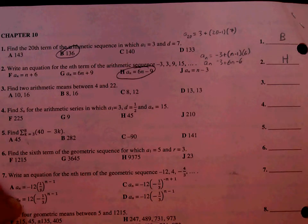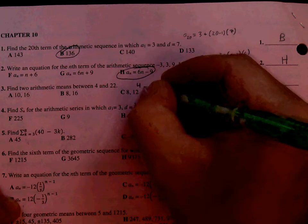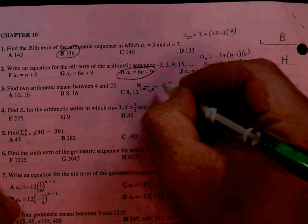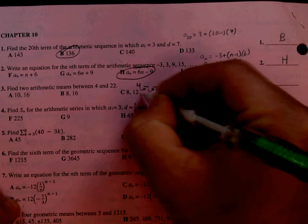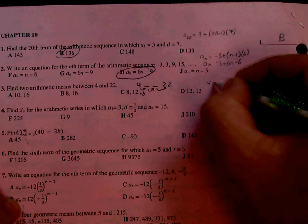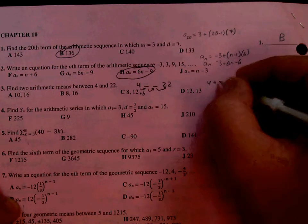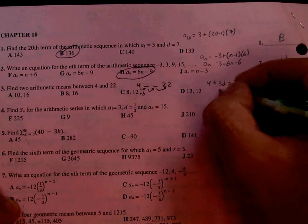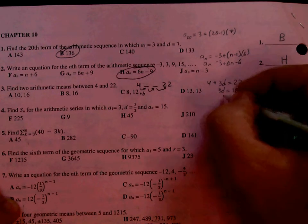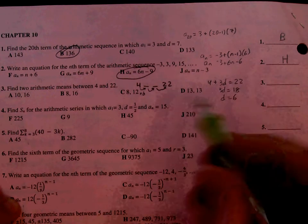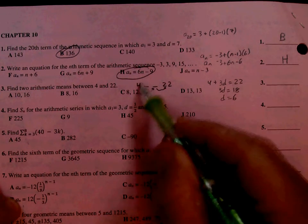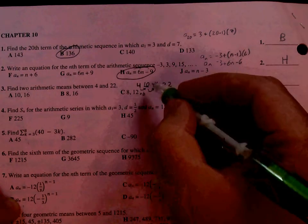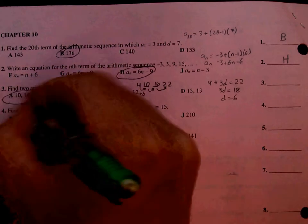Find two arithmetic means between 4 and 22. It's arithmetic, so we know we're adding the same number over and over again. We know that's D, so we can say we started at 4, we added D to it 3 times because that was 3 steps. We ended up at 22, so subtract the 4, divide by 3. We see that D is 6, so I'm adding 6 every time. 4 plus 6 is 10, plus 6 is 16. If you add 6 again, it does get you to 22, so 10 and 16 are the arithmetic means, so that's A.